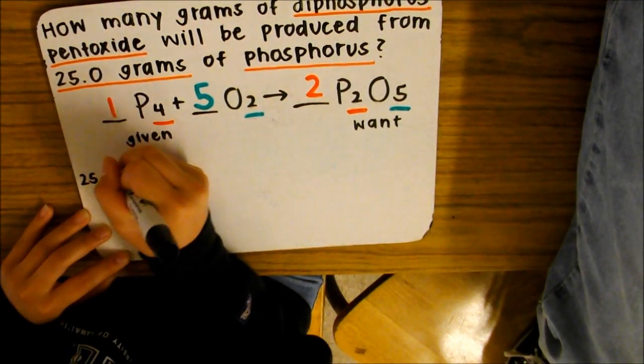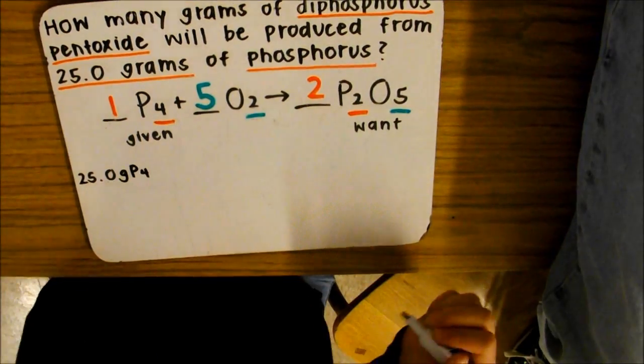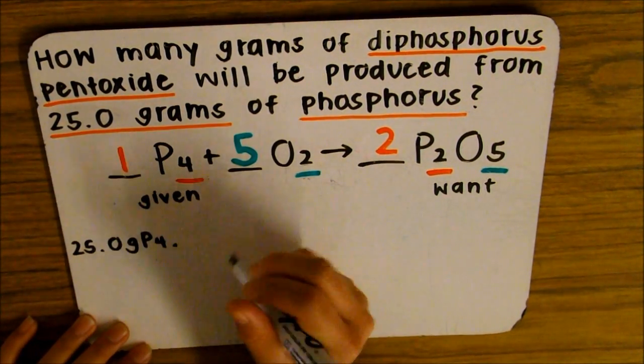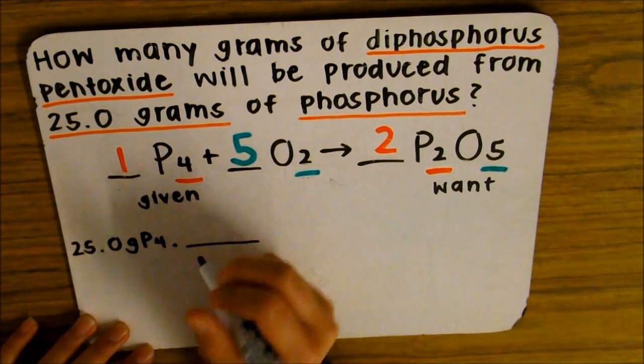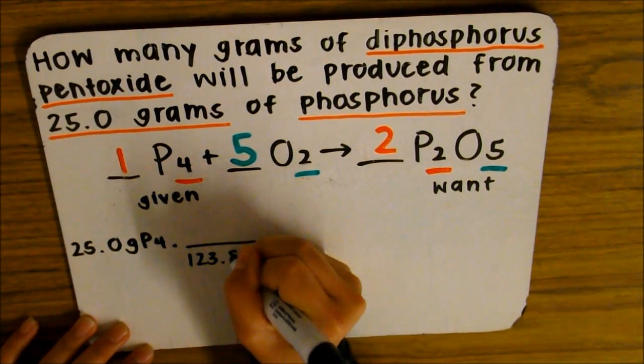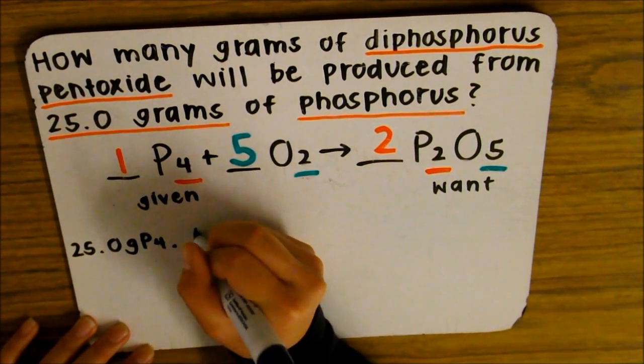So 25 grams of P4 multiplied. On the bottom we're going to write phosphorus, the total mass of it, so 123.88 grams. And on the top is 1 mole.